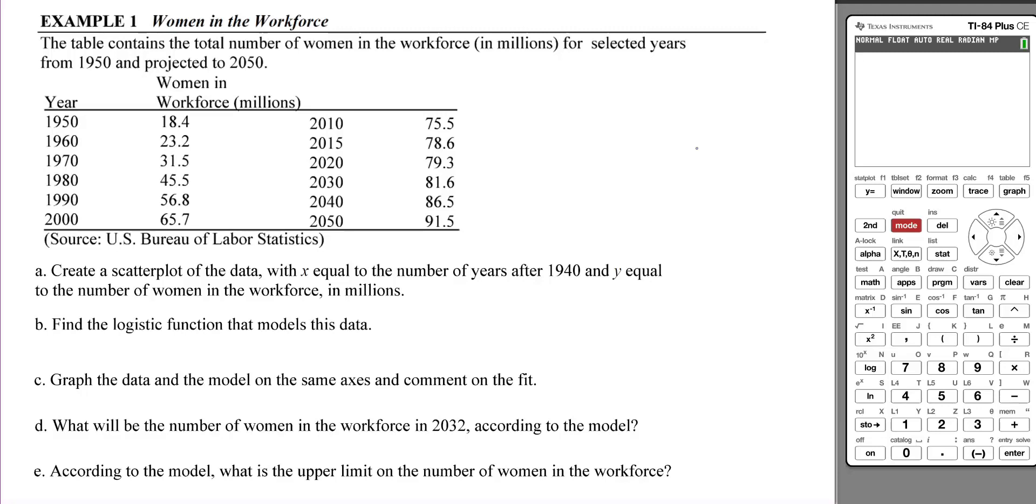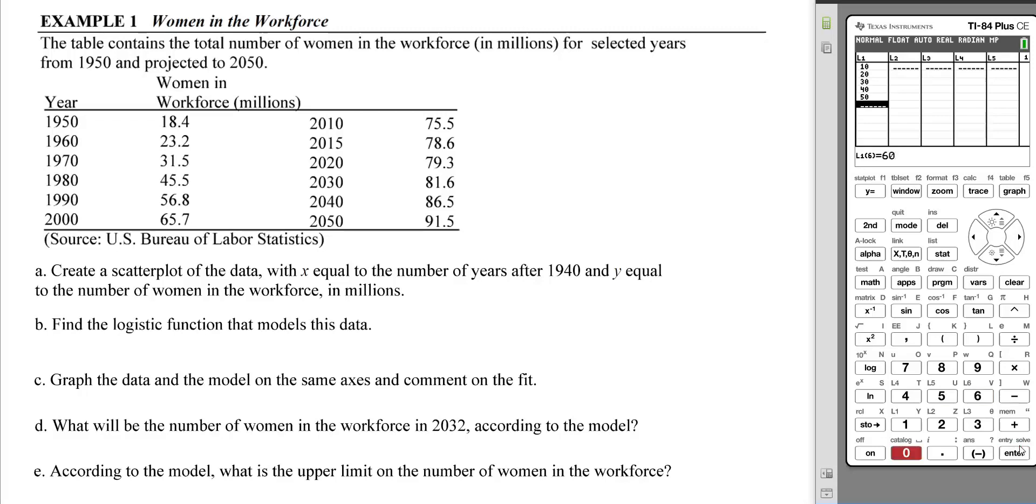Create a scatter plot of the data with x equal to the number of years after 1940 and y equal to the number of women in the workforce in millions. Let's go to the calculator and into the stat editor, putting x values into list 1.